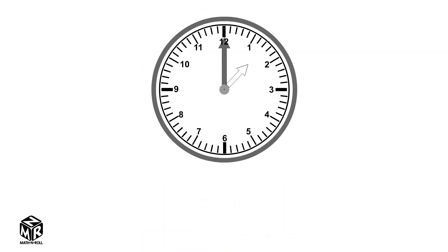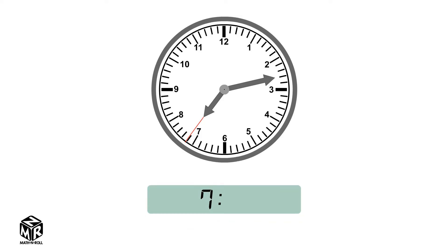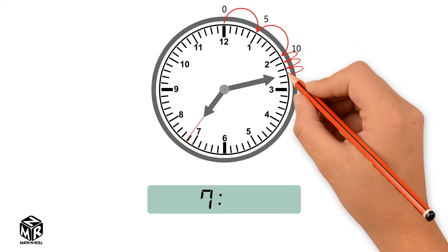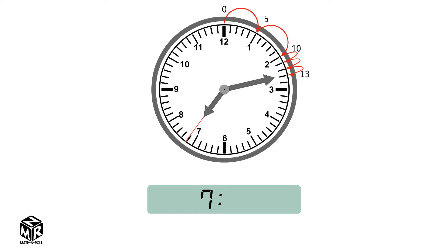Let's do another example. The hour hand points after 7, so the hour is 7. Now let's check the minutes — the minute hand points after 2, so let's count by 5s until we get to our point: 0, 5, 10. Now let's count by 1s until we hit our point. We get 13, so the time is 7:13, or 13 minutes after 7.